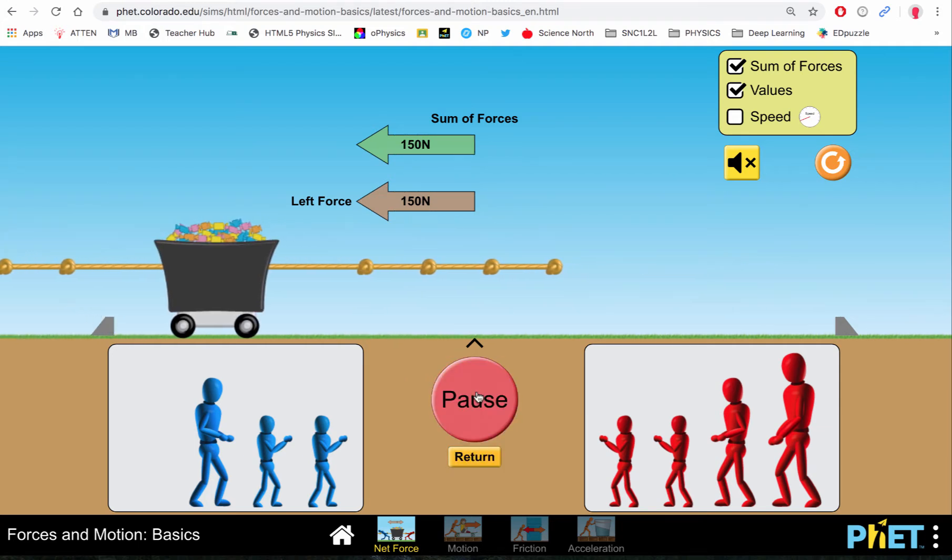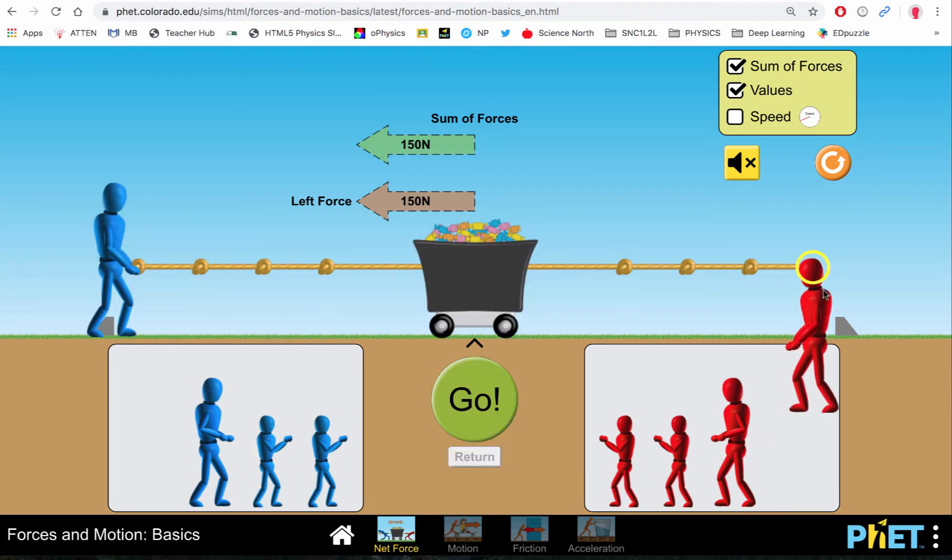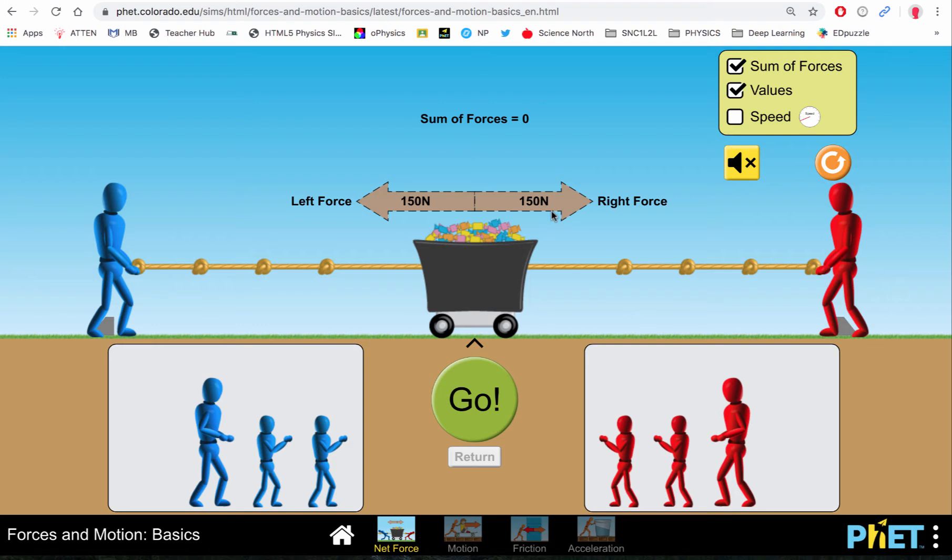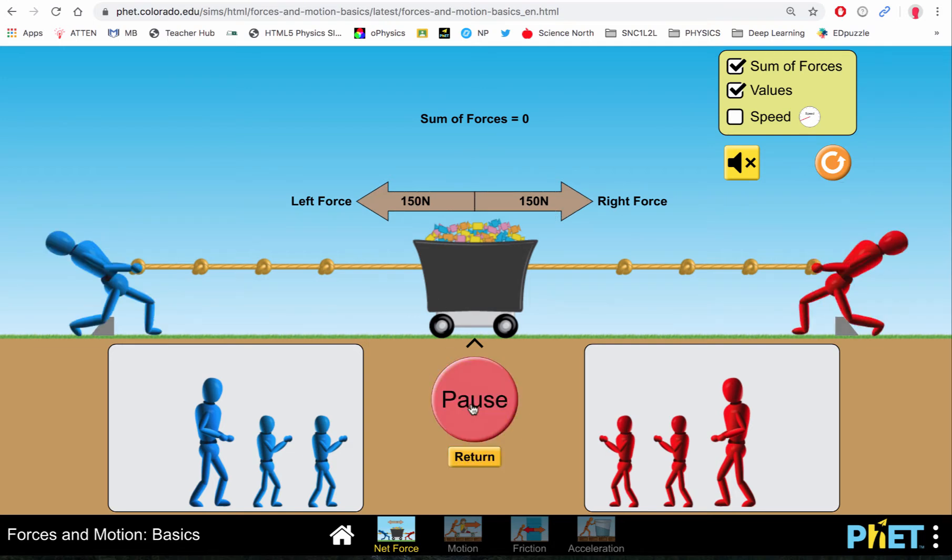I'm going to add a person on the opposite side. Now the right force is 150 Newtons, the left force is 150 Newtons. So if we had a tug-of-war with equal forces on either side, obviously they would be balanced and nothing would be moving.